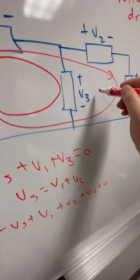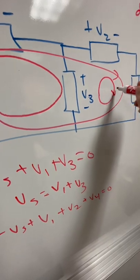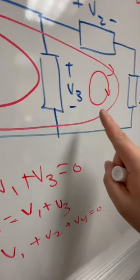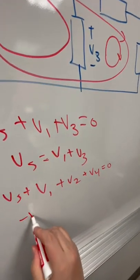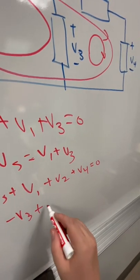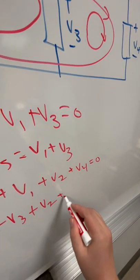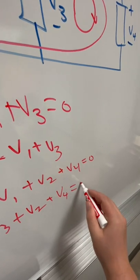I could do the same thing with this last little loop here. So I know, again, following the signs that minus V3 plus V2 plus V4 is equal to zero.